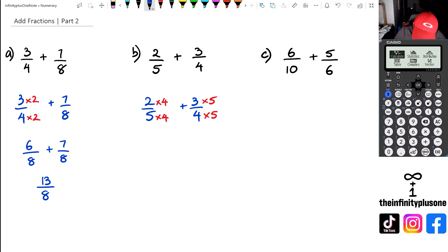So when I do this, I've actually got four times two, which happens to be eight, five times four, which happens to be 20, plus three times five, which is 15. And then four times five, which happens to be 20.